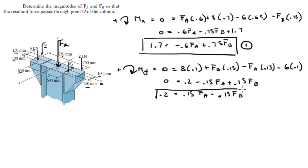Now I'm going to grab equation 1 and multiply it by the fraction 0.15 over 0.75. So 1.7 times 0.15 over 0.75 gives me 0.34.